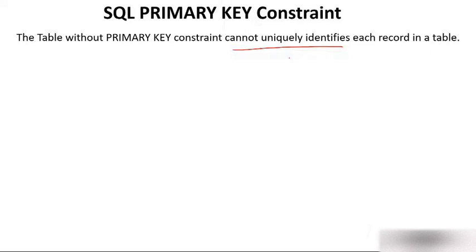For example, there are four Johns. If the roll number of all four Johns is one, and you want a single John, you will not get just one because all Johns have the same roll number. Suppose John, James, and Anna all have roll number one — if you query for roll number one, you will get three names. That will be a problem.